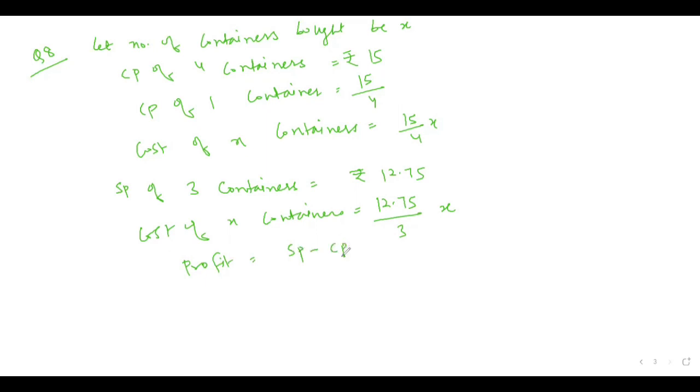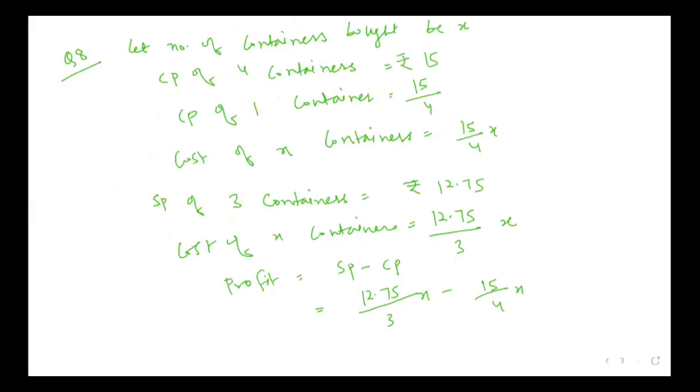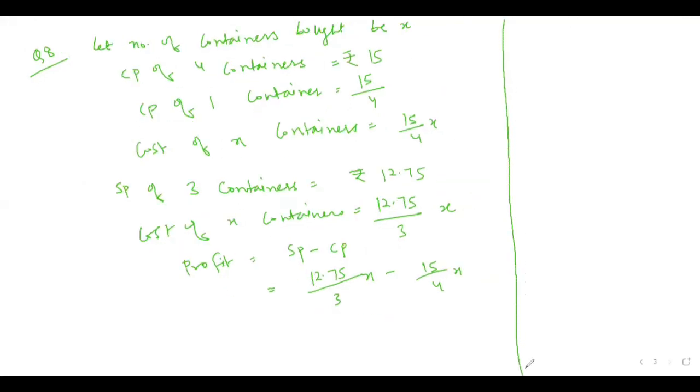That is 12.75 by 3X minus 15 by 4X. Take the LCM. LCM would be coming out to be as 12. 51X minus 45X equal to 7.50, so 6X is equal to 90. X is equal to 90 by 6, so 15. So he bought 15 containers.